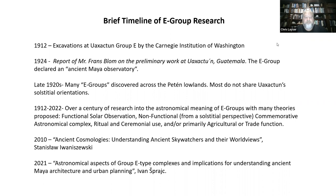In the late 1920s, Rickenson and others discovered a large amount of E-groups across the Maya lowlands, and most of these E-groups did not share Washaktun's orientation. This was followed by a century of research into Maya E-groups with lots of theories proposed — that the complexes were solar observatories, some functional, some non-functional and purely commemorative, purely for ritual and ceremonial use, and other theories had to do more with agriculture and trade.